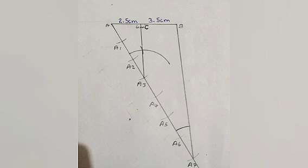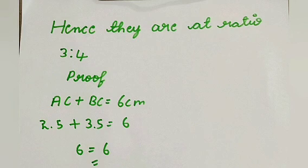Now AC will be 2.5 cm and BC will be 3.5 cm. Now for proof that they are in equal ratio at 3.5 cm and 2.5 cm, it will be equal to the line drawn from segment 6 cm. Hence, proved.